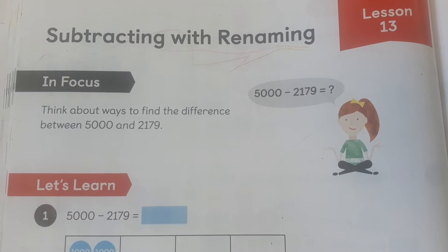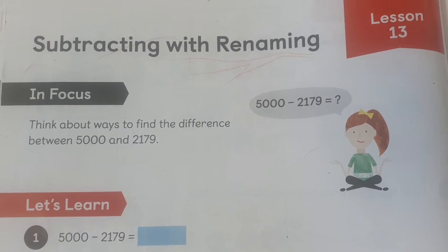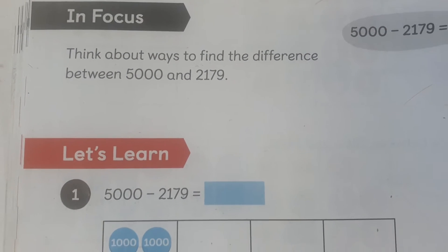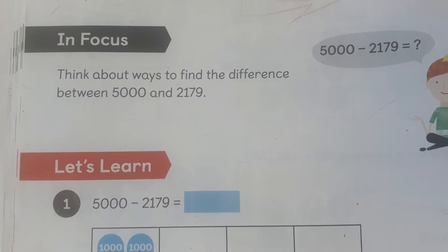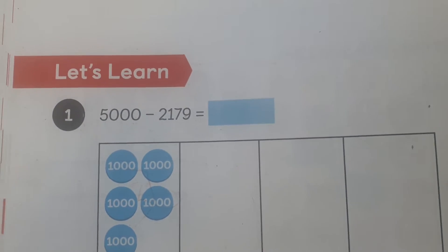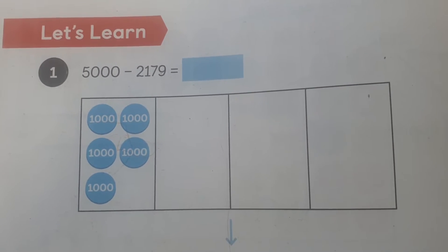To find the difference between 5,000 and 2,179. How could we do that? How can we find the difference? What would you do? Have a go, work it out. Can you do it in your heads? Can you do it on a whiteboard? What method would you choose?